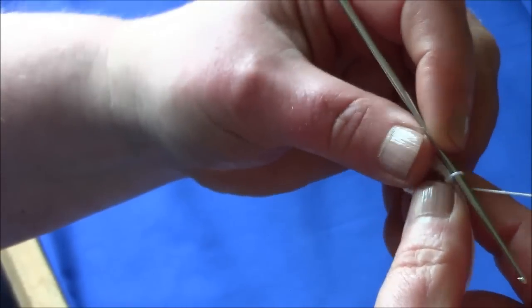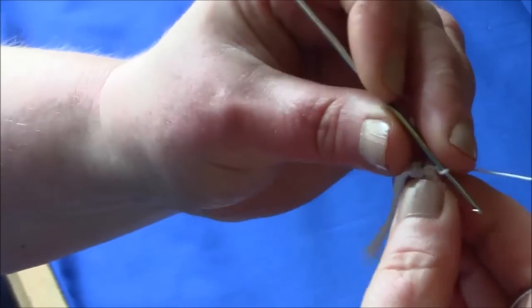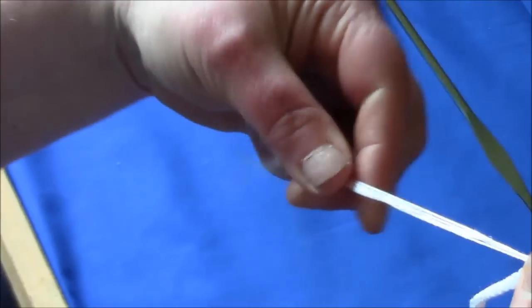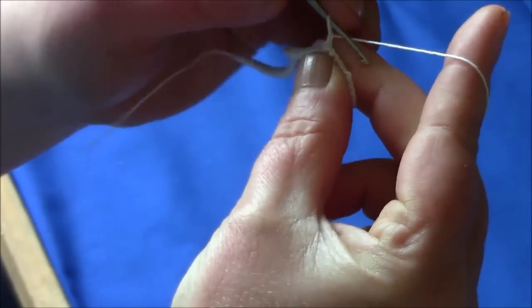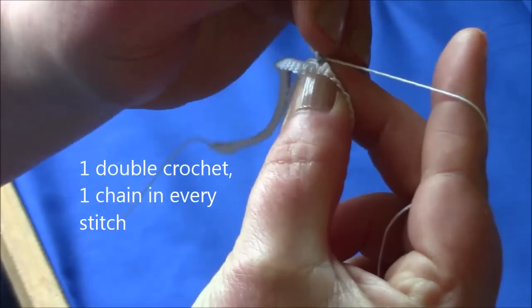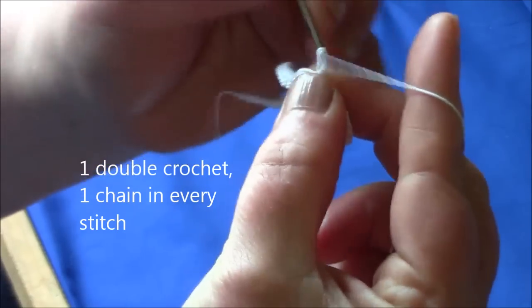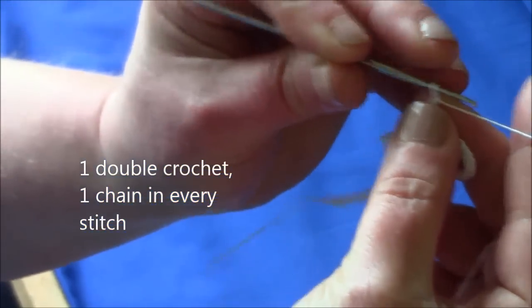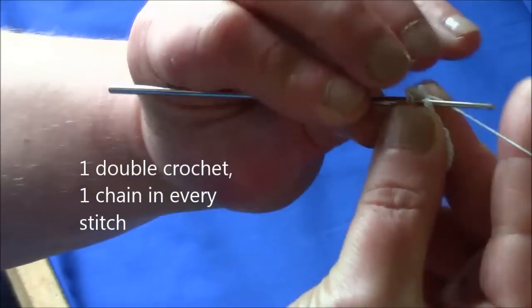Now what you do is chain 1, turn and you're going to drop the cord now. You're not going to use this cord. And do 1 double crochet in each stitch. 1 double crochet, chain 1.